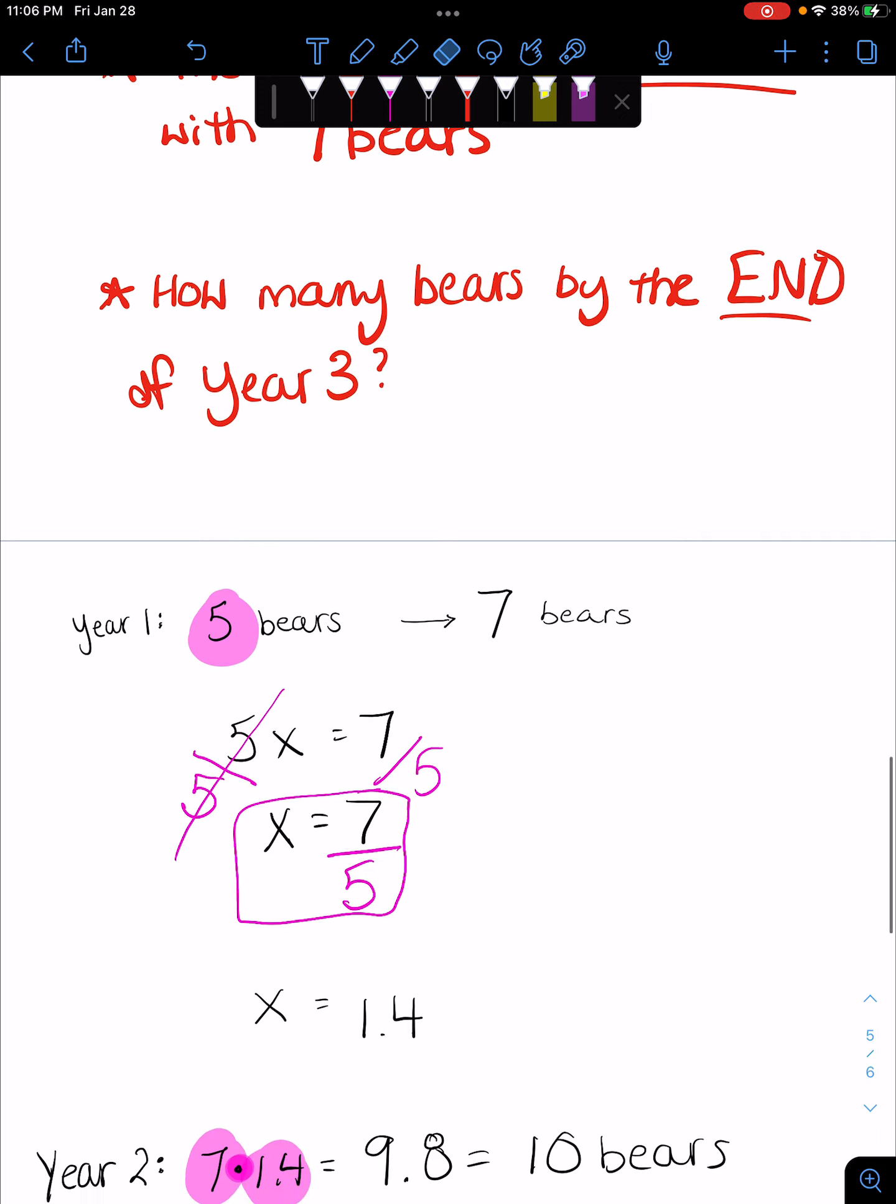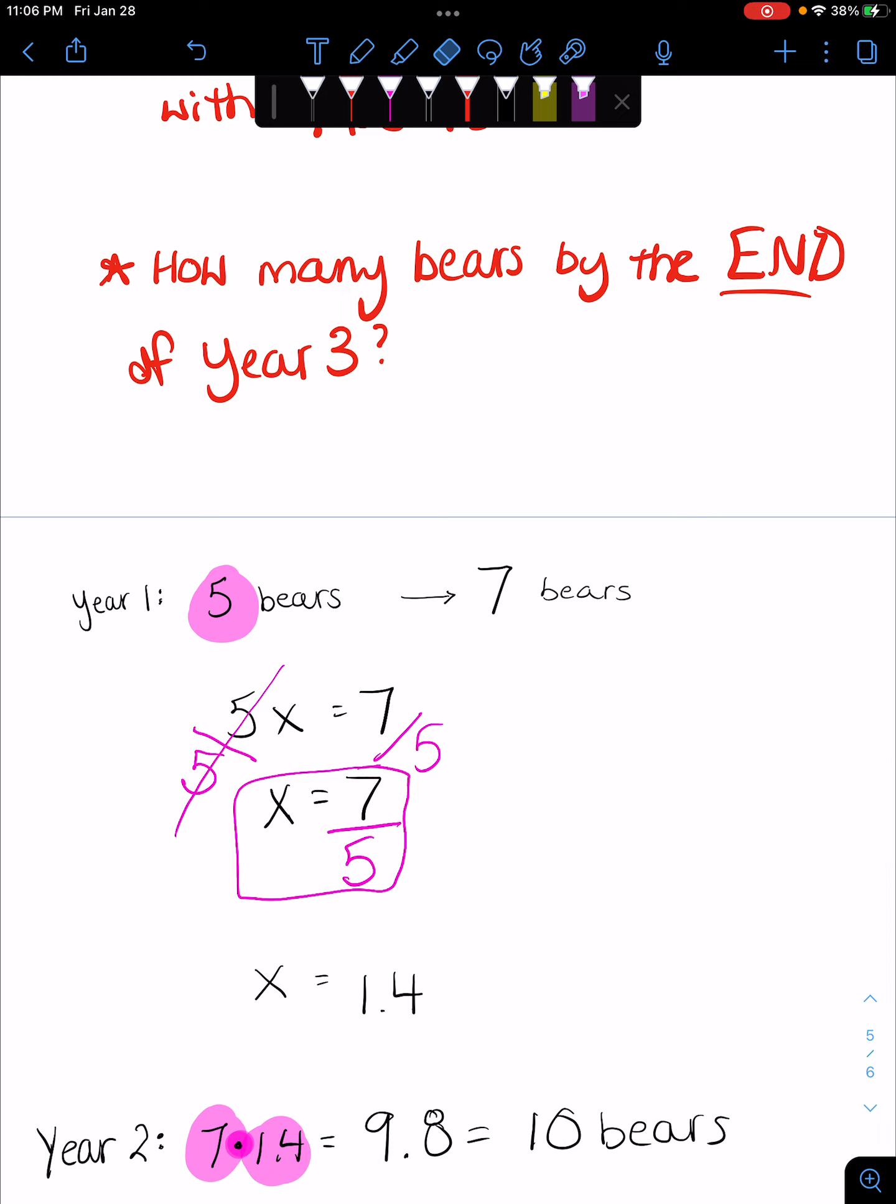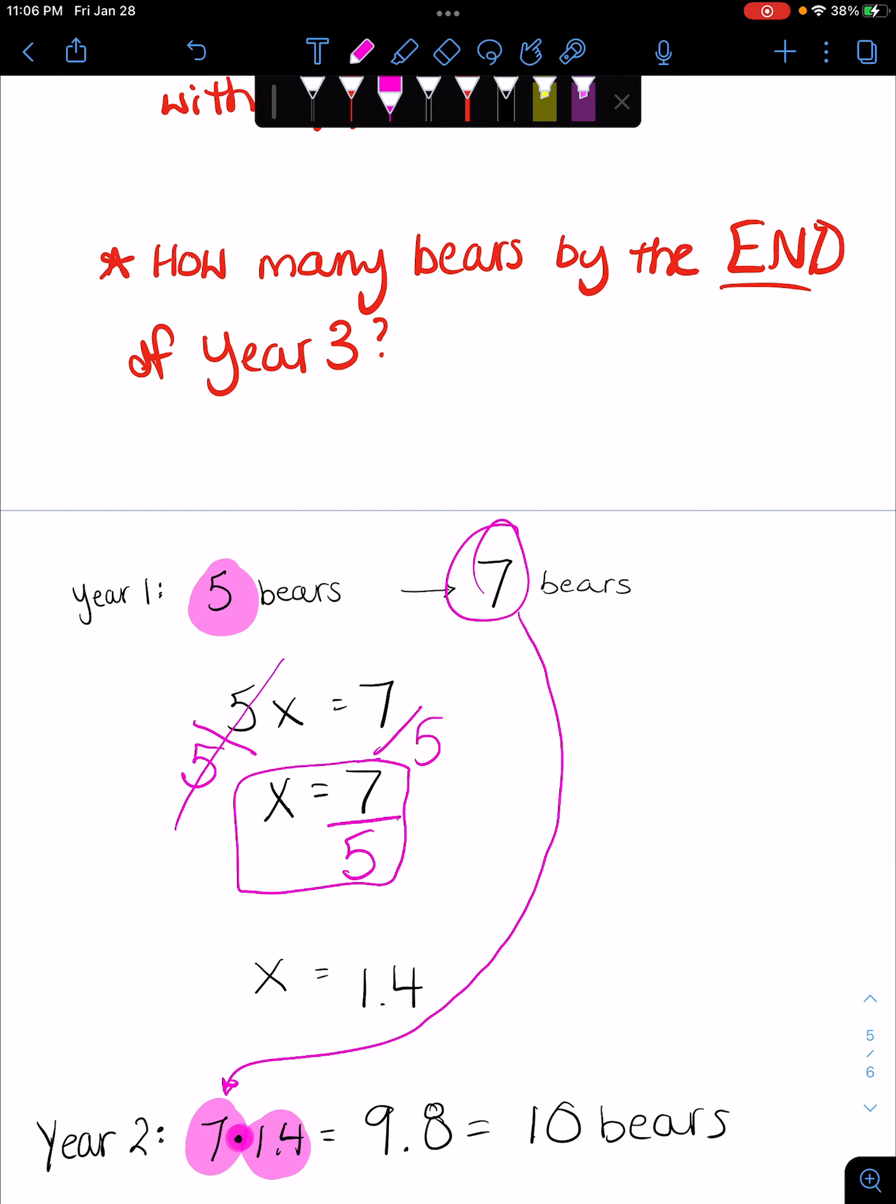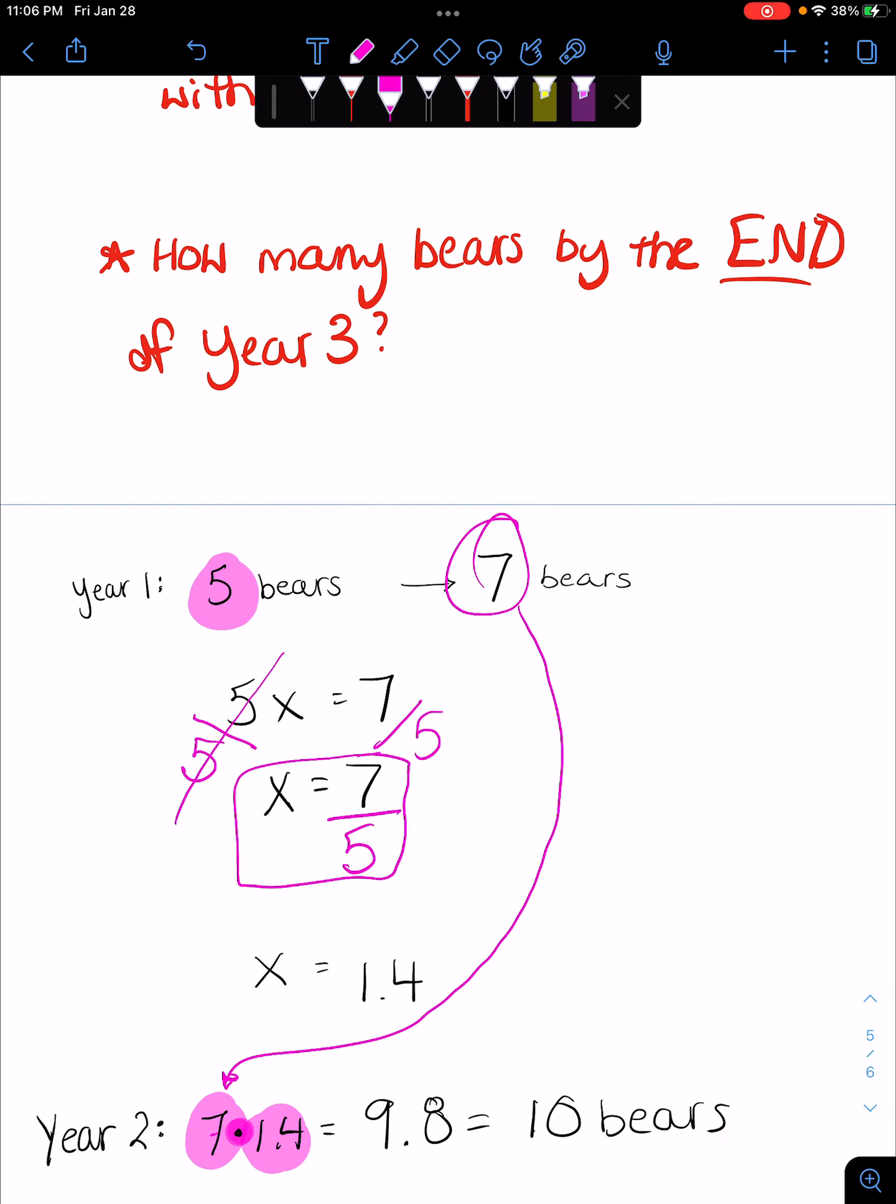So year two, what's that look like? We take this number - we take this number, that's what we start with, seven bears - and then we multiply it. That little circle means multiply because I didn't want to use another x so as not to confuse anybody. So seven times 1.4 equals 9.8. Obviously we can't have 0.8 of a bear, so we round that up to 10 bears.